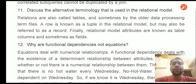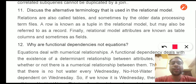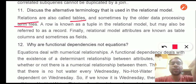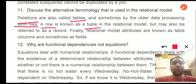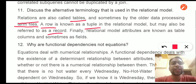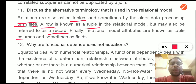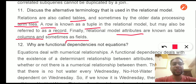Question 11: Discuss the alternative terminology used in the relational model. In the relational model, relations are also called tables, and sometimes they are called files. A row is known as a tuple, and is also referred to as a record. The attributes in the relational model are known as columns, and can also be considered as fields.